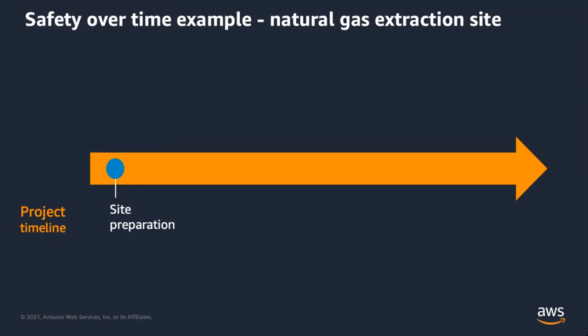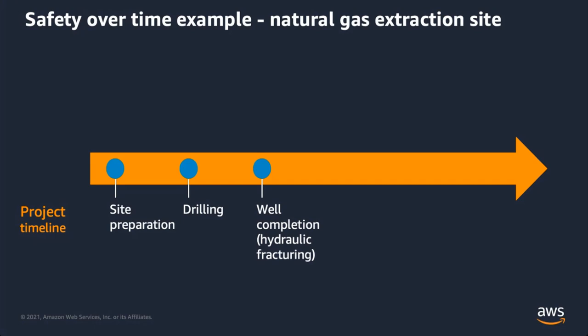Let's talk about safety over time, using a natural gas extraction site as an example. In hydraulic fracturing or fracking, you go to a site, clear the land, set up a drill, drill vertically and then horizontally into the bedrock. You then do well completion by injecting fracturing chemicals at high pressure to loosen resources, then put a well head on top. That well then goes into production for the next 20 to 30 years, after which companies come back in, remove all material, and return the land to its original state.